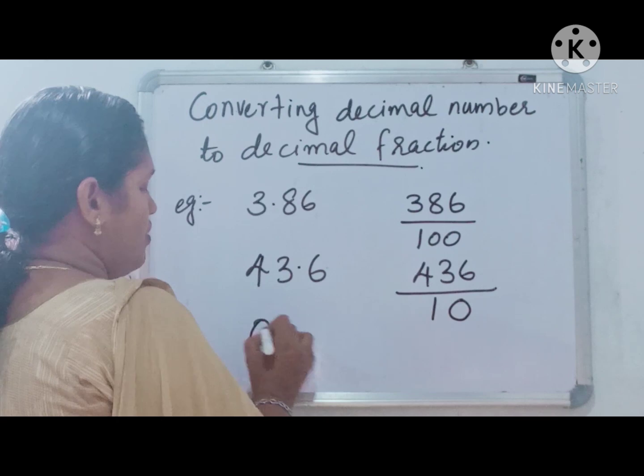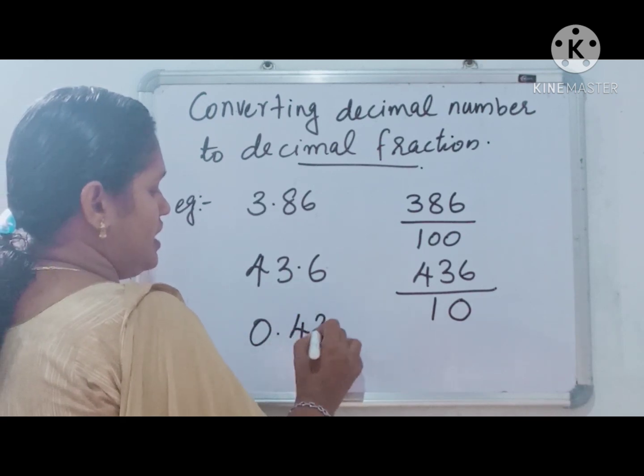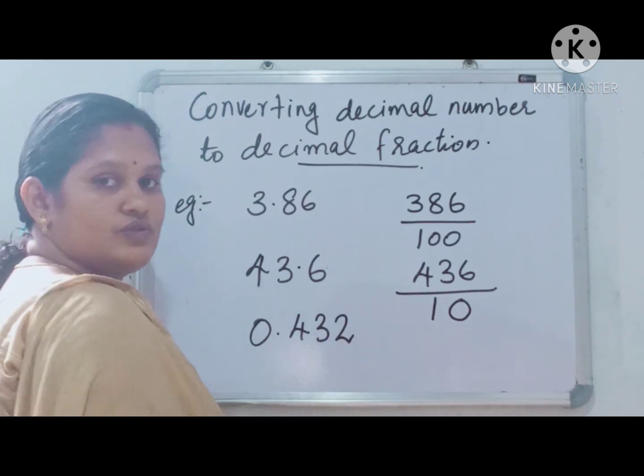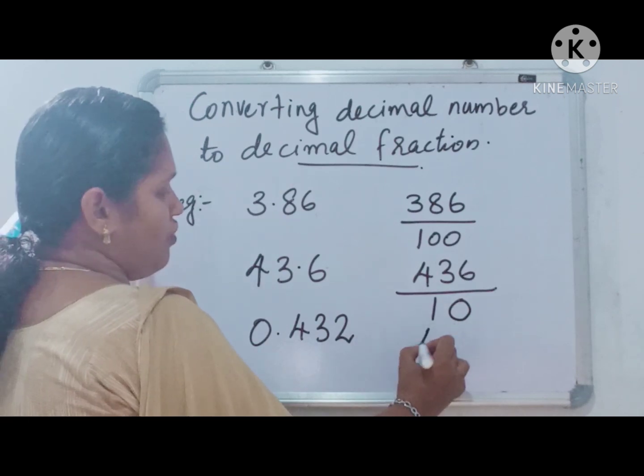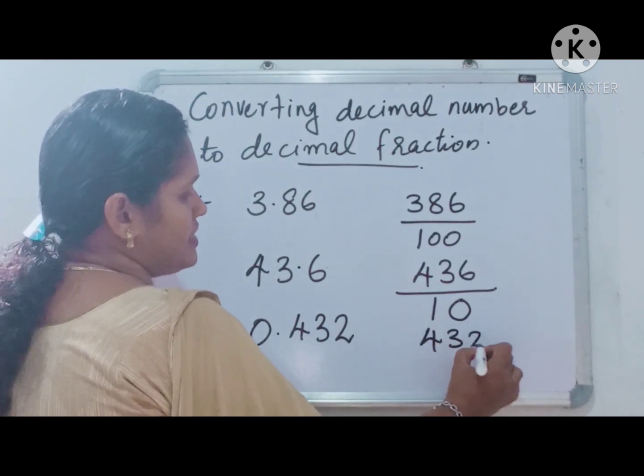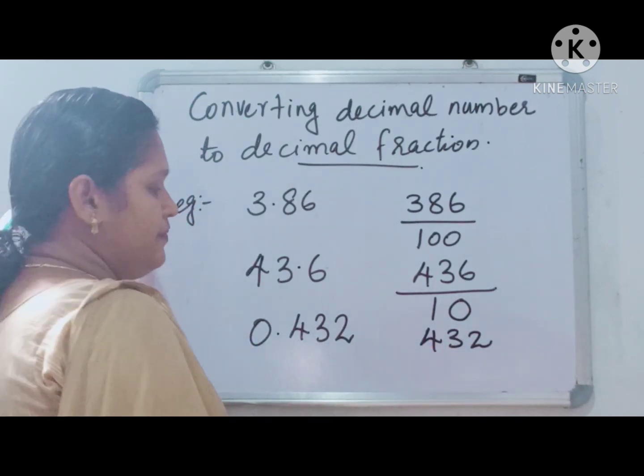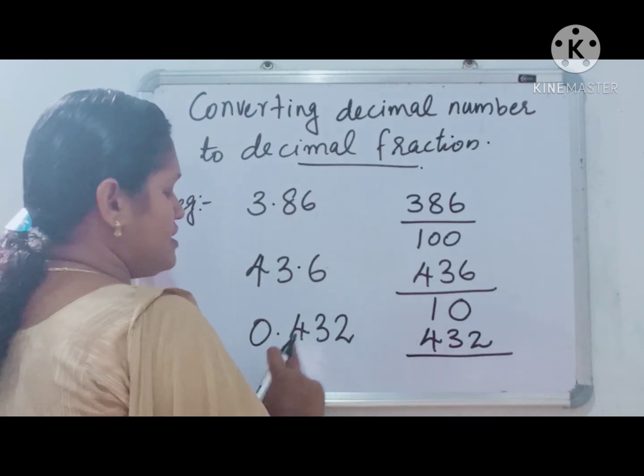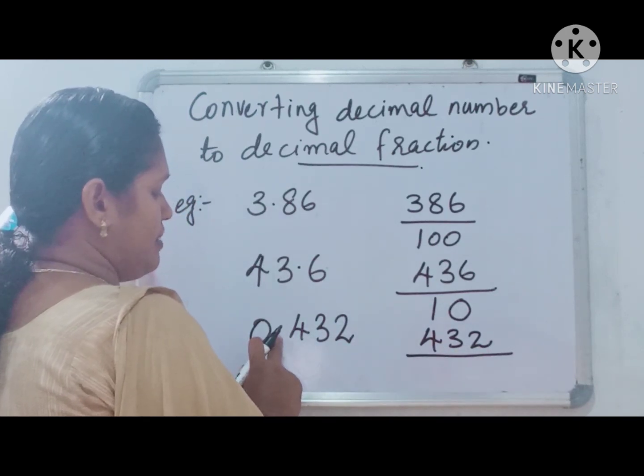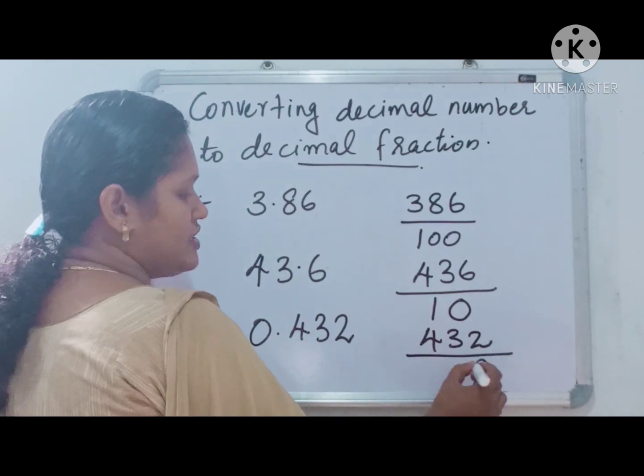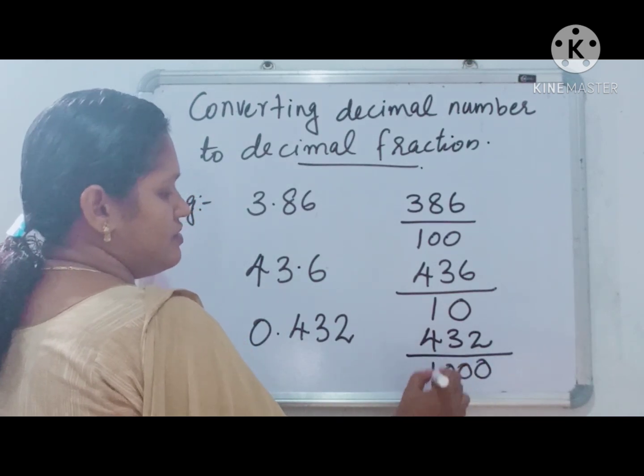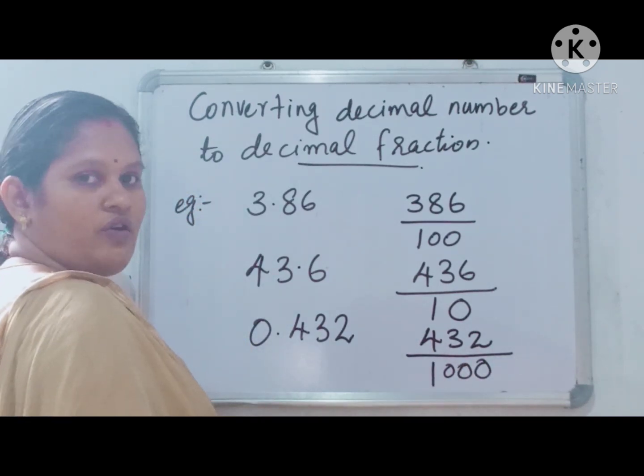Then 0.432. 432 as numerator. How many places are here after decimal point? 1, 2, 3. Right, 3 zeros. 1000.